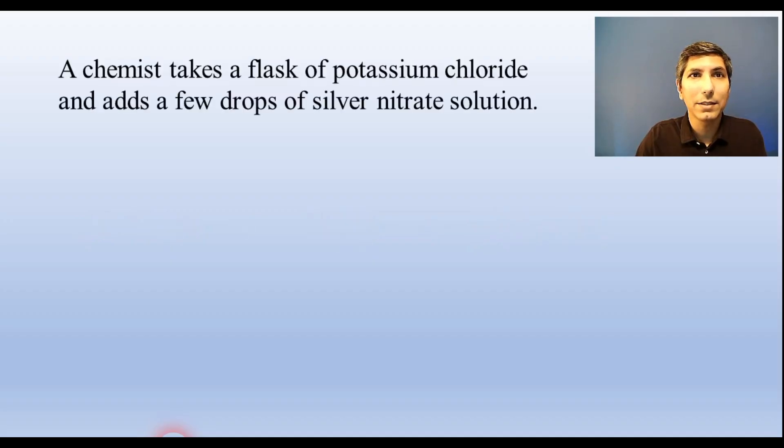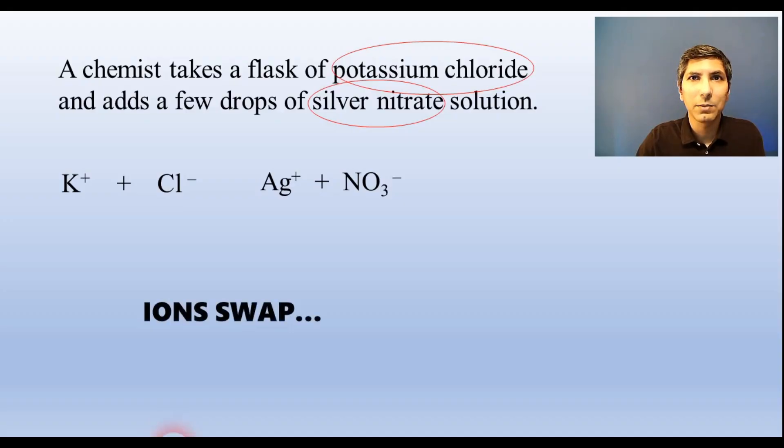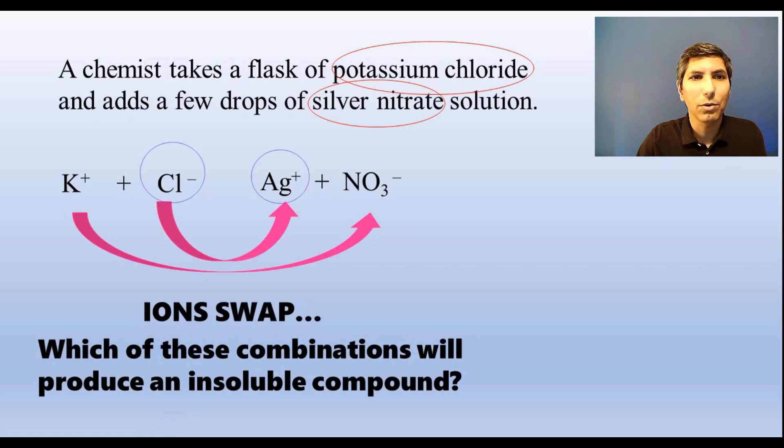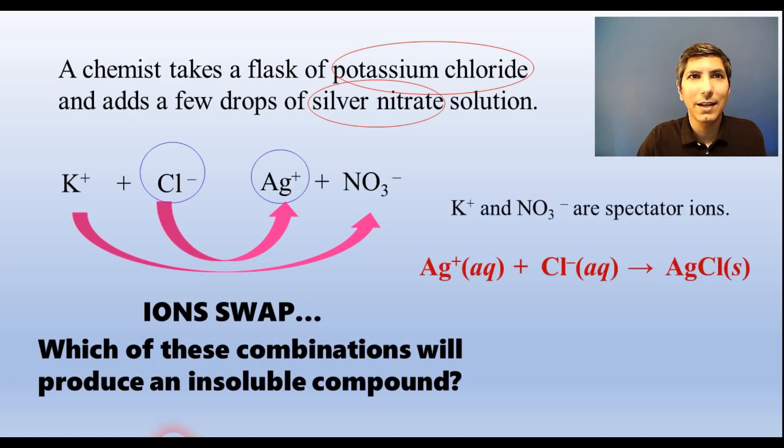When solutions react, some ions that are present may not be reacting, so it's useful to write a net ionic equation. Let's say that we mix solutions of potassium chloride and silver nitrate. Remember, ionic compounds are completely ionized when dissolved in water, so we actually have a mixture of four ions swimming around. Potassium, chloride, silver, and nitrate. These ions will try to swap partners, but only one of them will produce a product. All nitrates and alkali metal ions are soluble, so the precipitate must be silver chloride. We omit the spectator ions, and this is the net ionic equation.